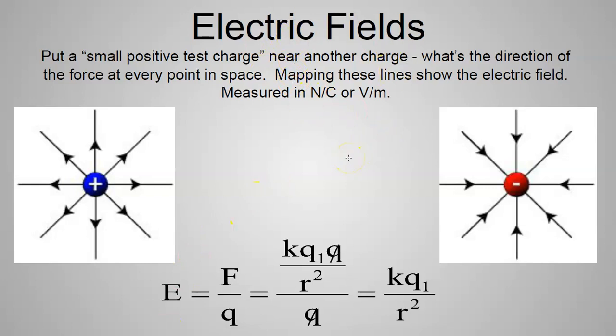A field in general is any space where at every point there is a vector associated with that point. For example, if you point at the doorknob in your room, your finger makes a vector — the direction is toward the doorknob, and the magnitude is the distance from your fingertip to the doorknob. Everywhere you move in the room, you could define a doorknob field — a region with a vector at every point indicating how far and in which direction the doorknob is.